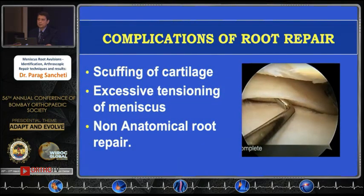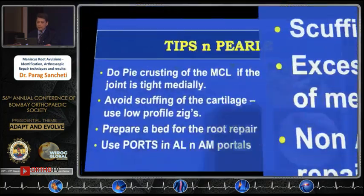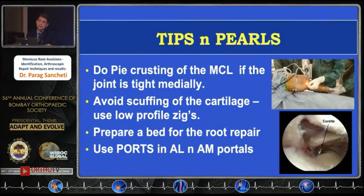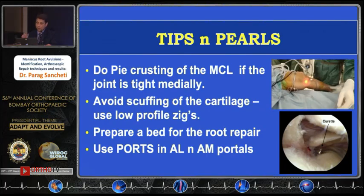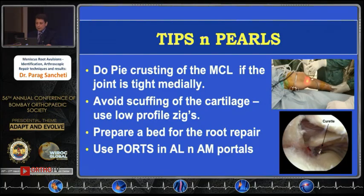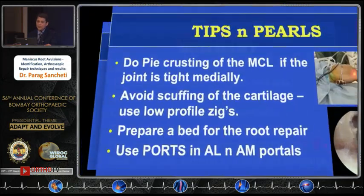Complications include scuffing of the articular cartilage because you are working in a very limited space — this is something you may see in the early part of your practice. Do not over-constrain once you have made your tunnel, and ensure your tunnel is anatomic. For a medial root repair you may have a tight medial joint — consider pie-crusting of the MCL to open up the medial space. Also, prepare the root by denuding the cartilage where the guide wire exits so meniscus tissue heals well. Use cannulas in the AL or AM portals to prevent sutures from getting entangled in fat.